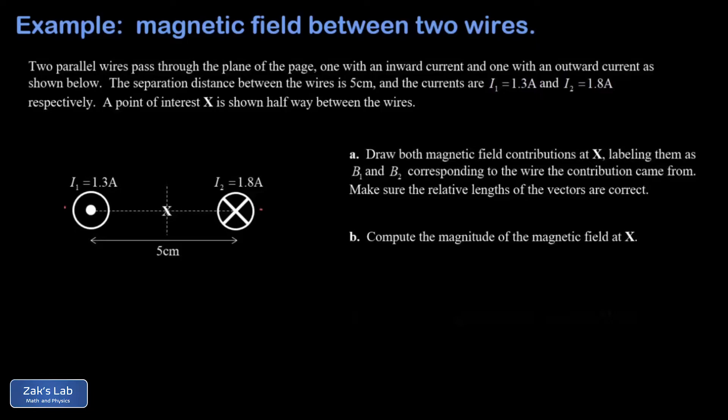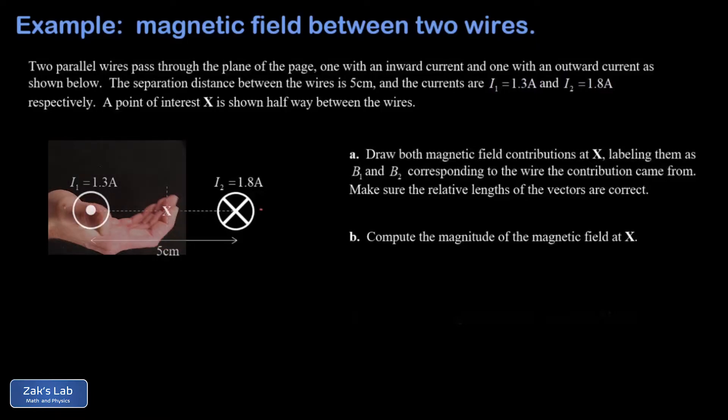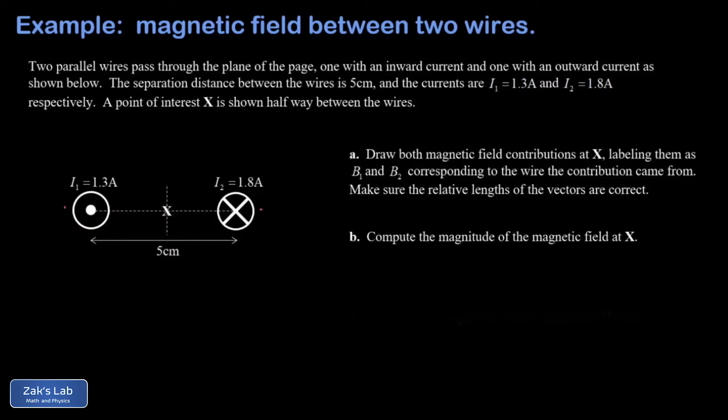In part A, we're going to draw both of the magnetic field contributions at the point of interest. To figure out the magnetic field contribution from the left wire, wire number 1, we point our thumb in the direction of the current, and then the fingers of our right hand wrap around in the direction of the magnetic field. This means the field contribution is pointing upward at the point of interest, and we'll call that B1.